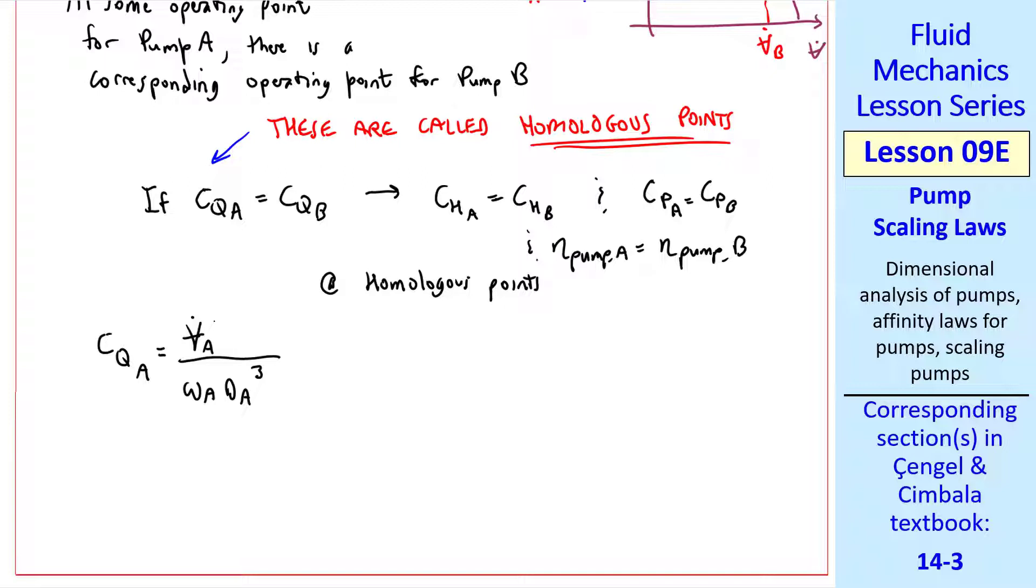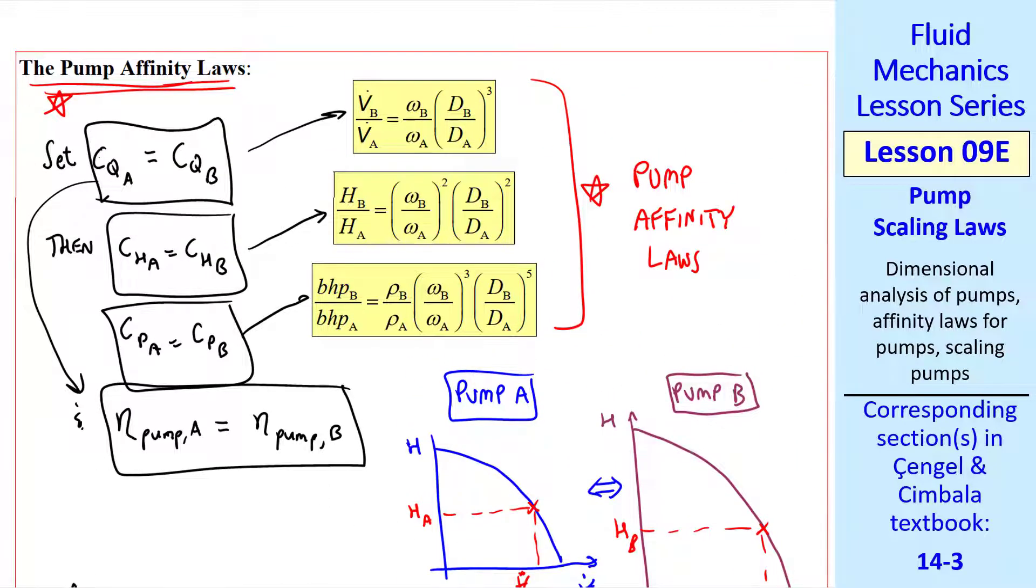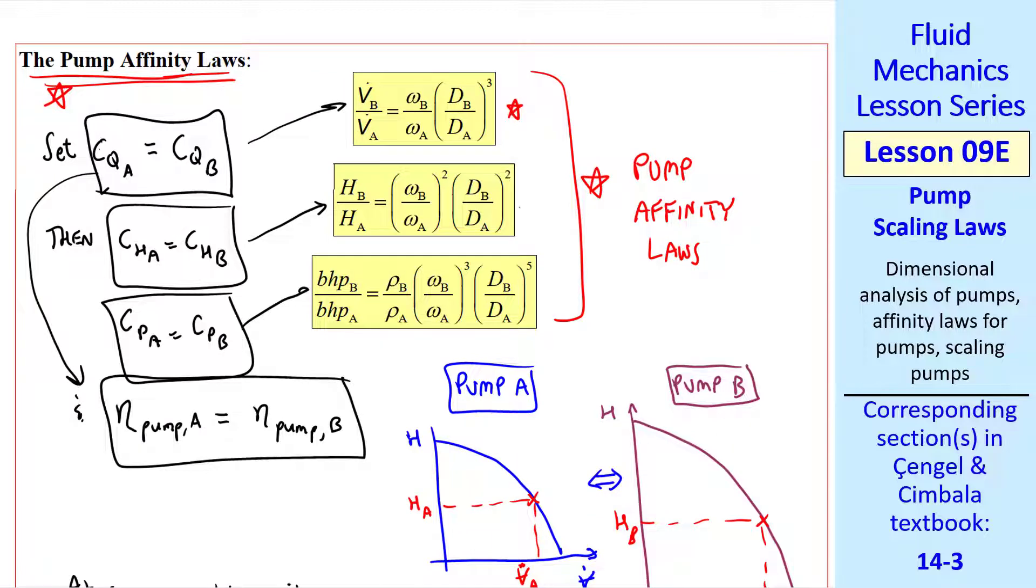Let's do a little bit of algebra. CQA is V dot A over omega A DA cubed, and at homologous points this is also equal to V dot B over omega B DB cubed, which we write as V dot B over V dot A equal omega B over omega A DB over DA cubed. This is our first affinity law. When I scroll up, you can see that this is this equation. In an exactly similar way, we get these two equations. If we put an exponent one on the omega B over omega A term in the first equation, we see that we have an exponent of one, two, and three on the ratio of omegas, which is the angular velocity rotation rate of the pumps.